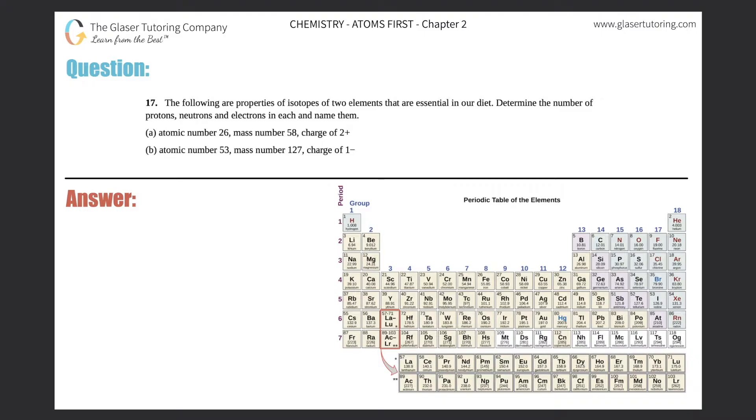Number 17. The following are properties of isotopes of two elements that are essential in our diet. Determine the number of protons, neutrons, and electrons in each and name them. Alright, so we have A and B, so I'm just going to write A up top here and B down here.